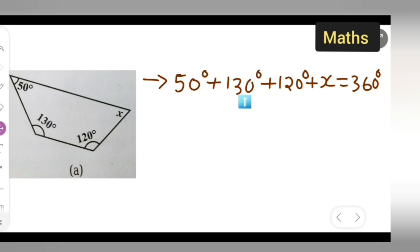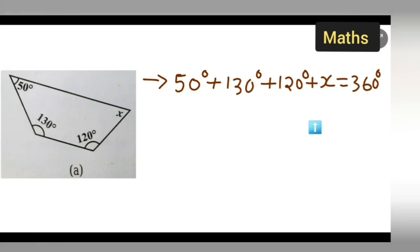Now add these values: 50 plus 130 gives 180, and 180 plus 120 gives 300. So write down: 300° plus x is equal to 360°.